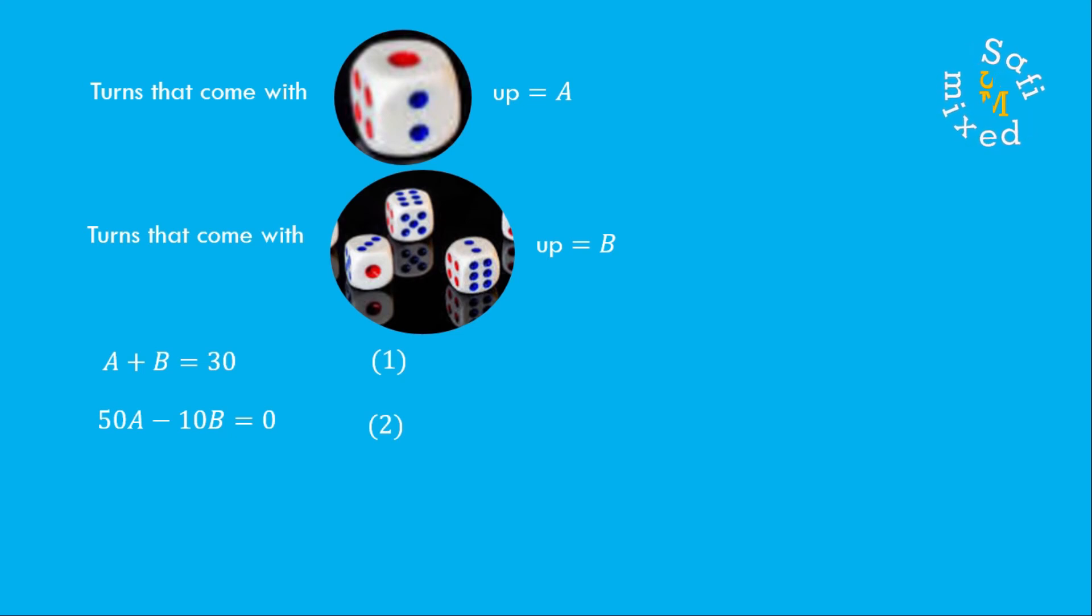From equation 1, we can write A equals 30 minus B. Setting this value in equation 2, we can write 50 times (30 minus B) minus 10 times B equals 0, which results in B equals 25. Substituting this value back for A in equation 3, we get A equals 5. So out of 30 turns, 5 turns come with one face of the dice.